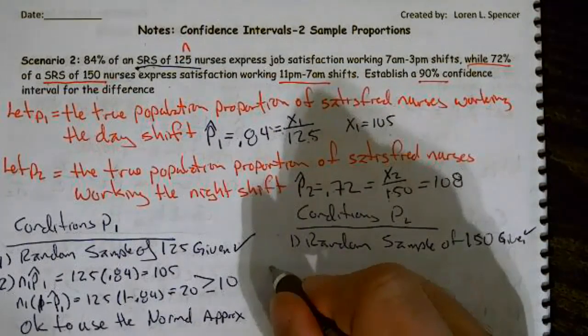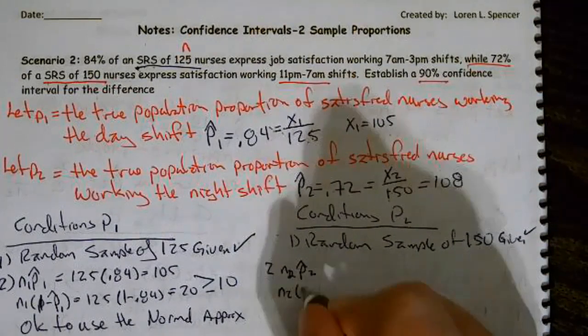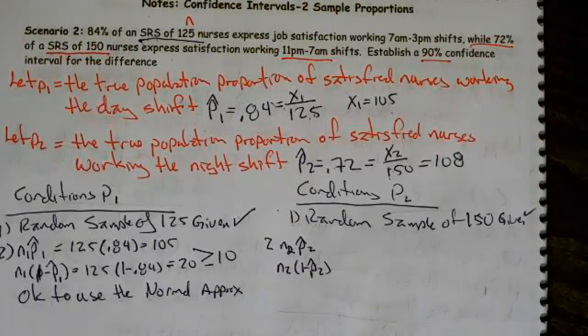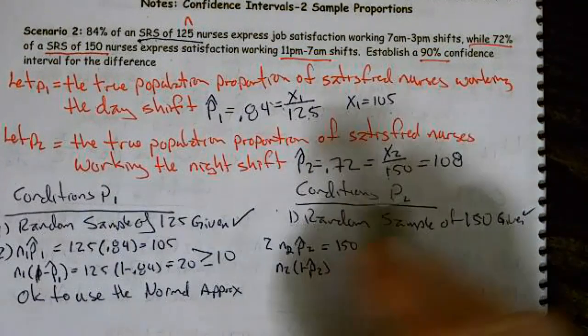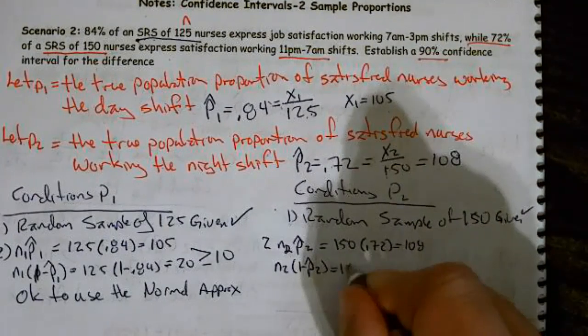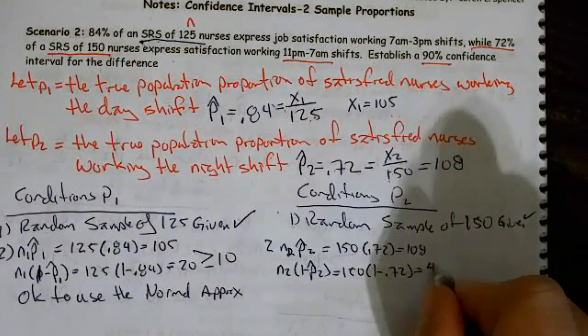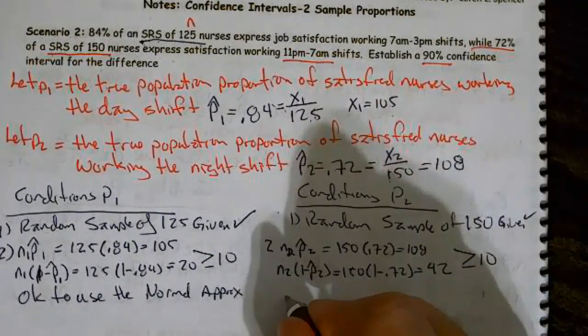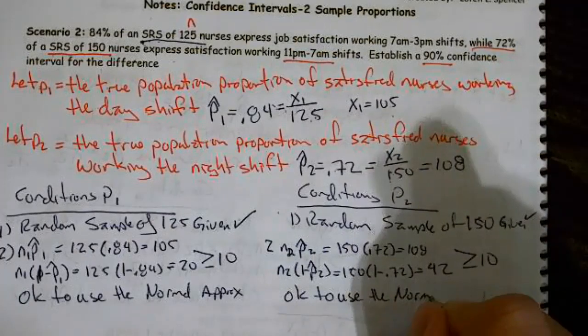Then we come over here, and we're going to have to go n2, P hat 2, n2 times 1 minus P hat 2. And p hat 2 was 72%. And that equals 108. And when I multiply that, I end up getting 42. And that's also greater than or equal to 10. So, okay, to use the normal approximation.